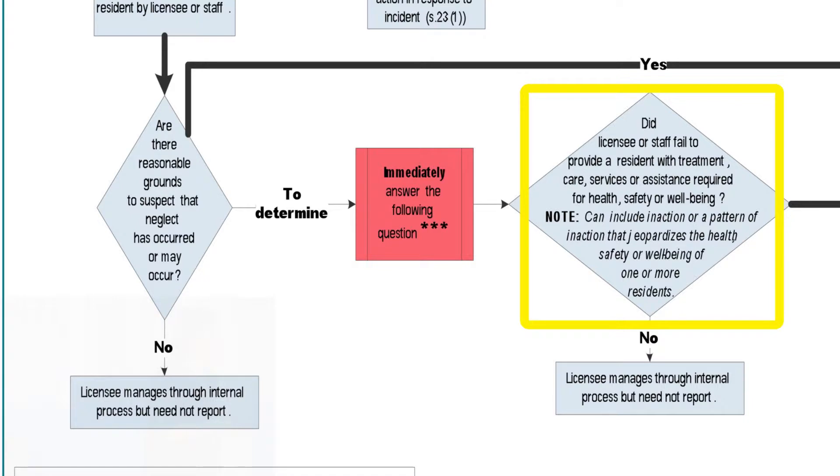Did the licensee or staff, again there's the who. So you'll notice there's no separate whodunit column because the who is established as licensee or staff. Did they fail to provide a resident with treatment, care, services, or assistance required for health, safety, or well-being?